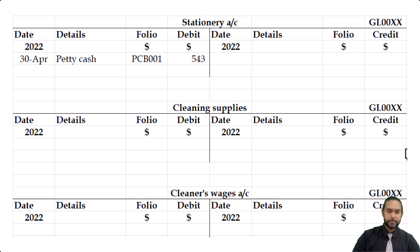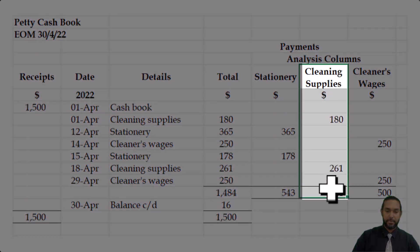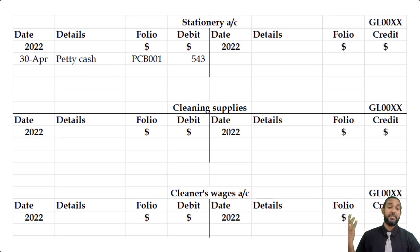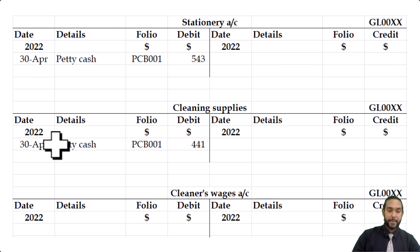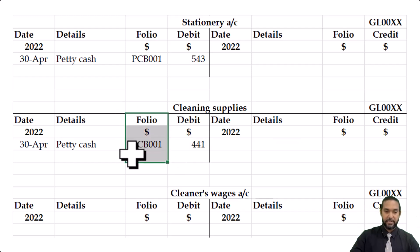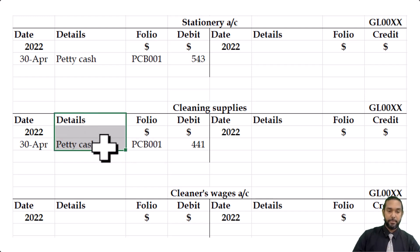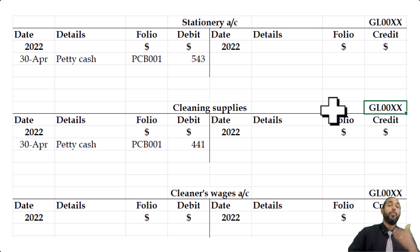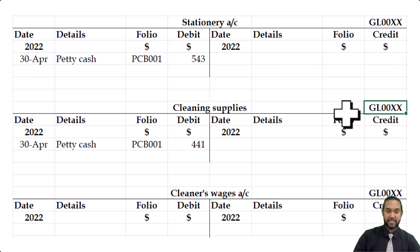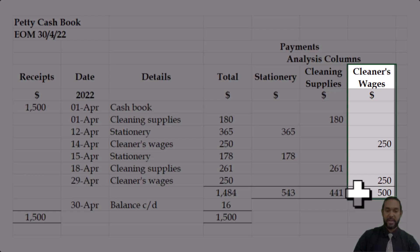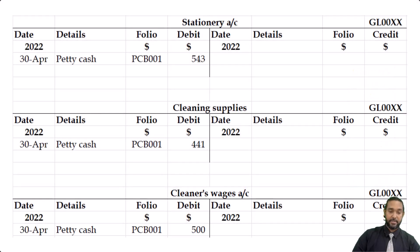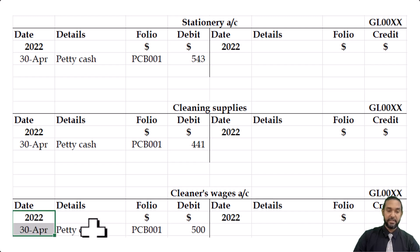The cleaning supplies account, also in the general ledger (GL00XX), had a total of $441. On the debit side, we put $441, folio PCB001, details 'petty cash,' and the month-end date. Finally, the cleaner's wages account: the column totaled $500. On the debit side, we put $500, the folio is PCB001, details 'petty cash,' and the date is month end. Cleaning supplies and cleaner's wages are expenses, so both exist in the general ledger.